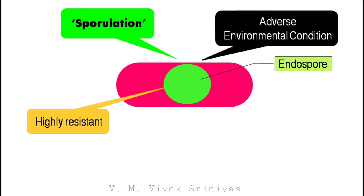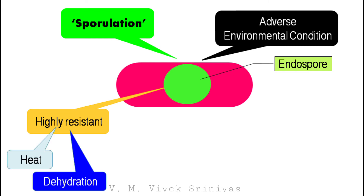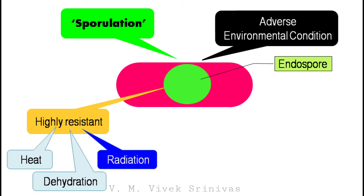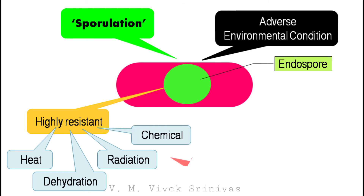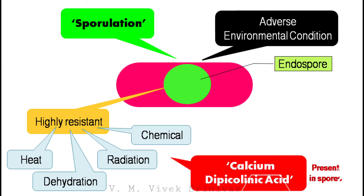The endospores are highly resistant to heat, dehydration, UV radiations, and chemicals. The resistance of the spore is mediated by a chemical called calcium dipicolinic acid, which is found only in the spores.